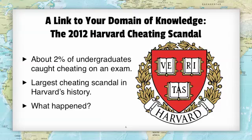That domain of knowledge is the idea of cheating — academic misconduct, as we refer to it here at the University of Montana. During this course, you will likely take an assignment that will ask you to look at particular types of academic misconduct, particularly plagiarism, what it is and how to avoid it. In 2012, there was a major cheating scandal at Harvard University. About 2% of the undergraduate body were caught in potentially cheating on an exam — actually in an introductory political science class called Introduction to Congress.